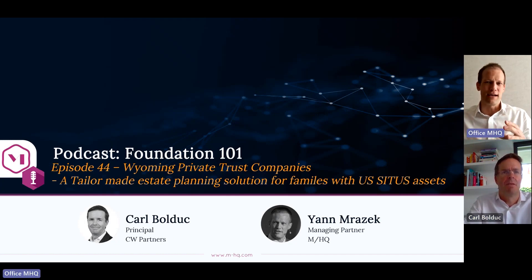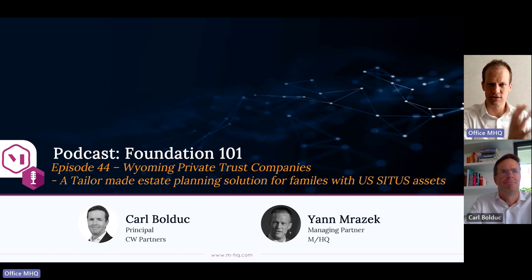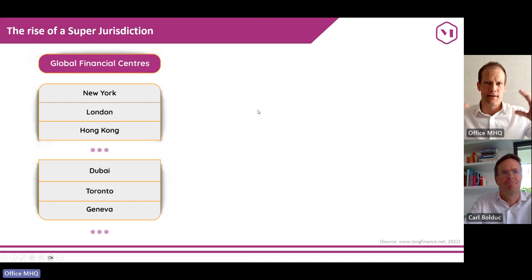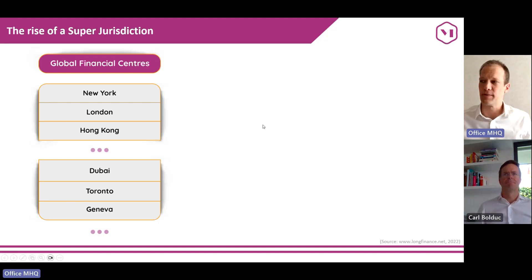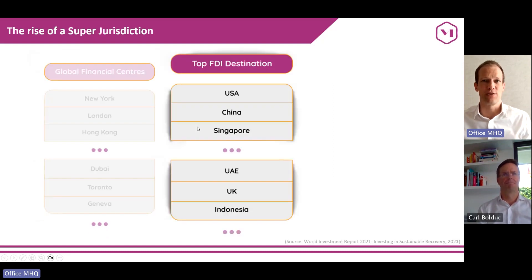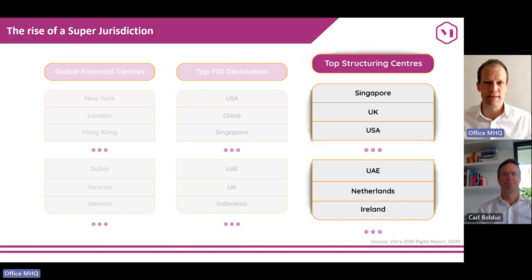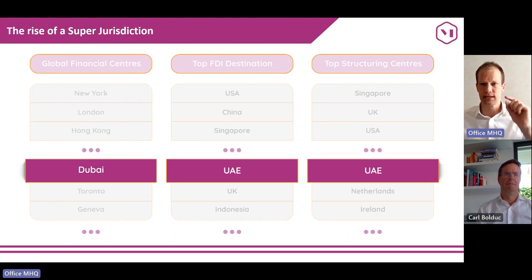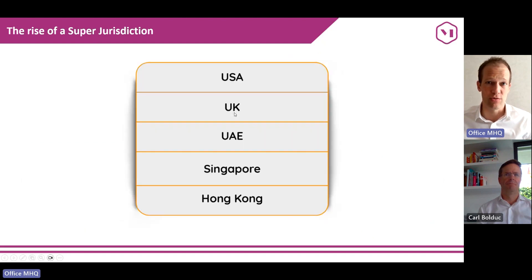For context, today we are going to talk about cross-border dynamics between the Middle East and, to an extent, the US — whether they are structured areas, underlying assets, or a combination of both. This comes from two topics. The first is that the world of structuring has changed immensely over the past couple of years. We've talked about the rise of the so-called super jurisdictions — typically jurisdictions in the top 10 as global financial centers, top 10 as structuring centers, and top 10 as foreign direct investment jurisdictions.